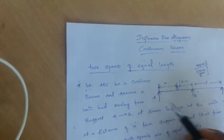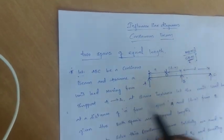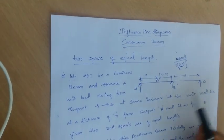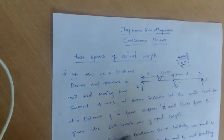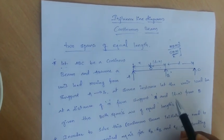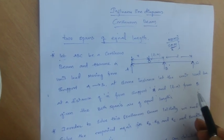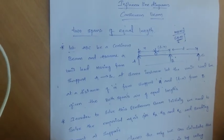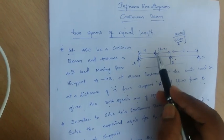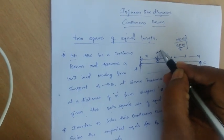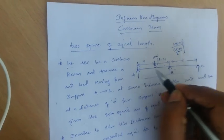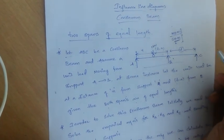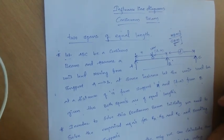Let A, B, C be a continuous beam, and assume a unit load moving from support A to B and then to C. At some instance, let the unit load be at a distance of X from support A and L minus X from support B. Both spans are of equal length L, as seen in the diagram.